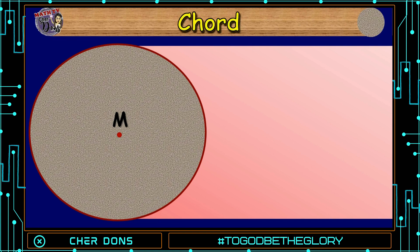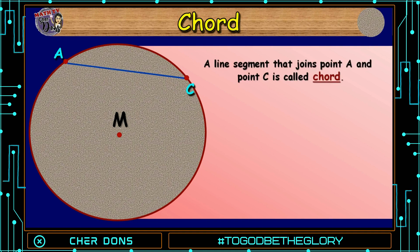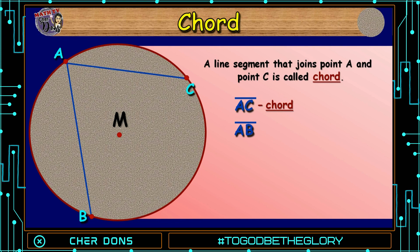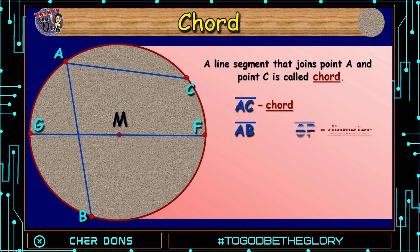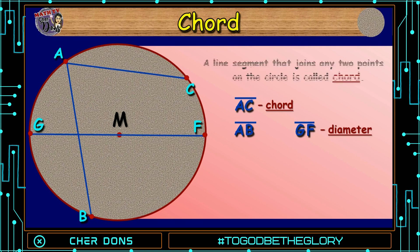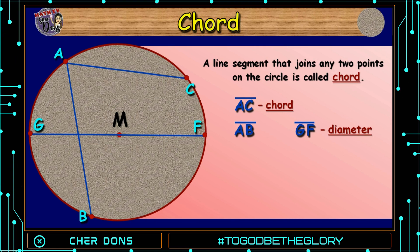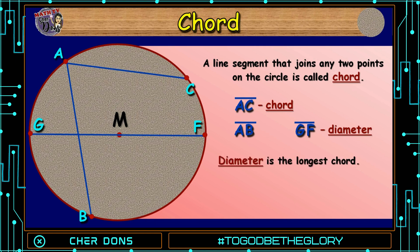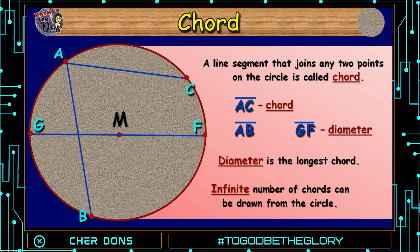From circle M, I will draw a line segment from point A to point C. This line segment that joins point A and point C is called a chord. So, line segment AC is a chord. I will connect again point A to point B — is this a chord? Yes. How about from point G to point F, passing through the center — is this a chord? Some of you say no, because it's a diameter, which is true. But remember that a chord is a line segment that joins any two points on the circle, and the diameter is one of them. So, the diameter is the longest chord, and an infinite number of chords can be drawn from the circle.